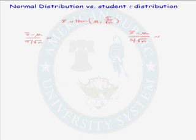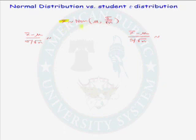To answer that, let's consider the sampling distribution of our sample mean x-bar. When our parent population is normal, or the sample size is greater than 30, by the central limit theorem we know that x-bar will be normal or approximately normal with mean mu and standard deviation sigma divided by square root of n.